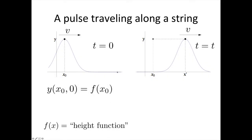We're going to look at a pulse traveling to the right, in the positive direction, along a piece of string. This will get a bit mathematical, but hopefully you'll be able to physically understand what the maths is telling us. So this is the pulse at t = 0. We're looking at the value of y at x = x₀, and this is our y(x,t). We're saying that equals some height function f — f could really be anything, it's just some function describing the height. So the height at position x₀ equals this function, defined for t = 0.